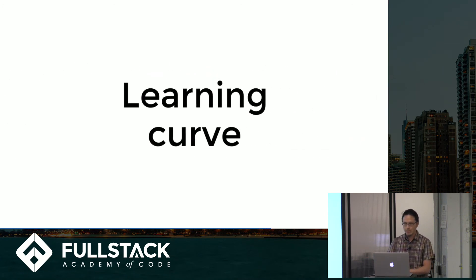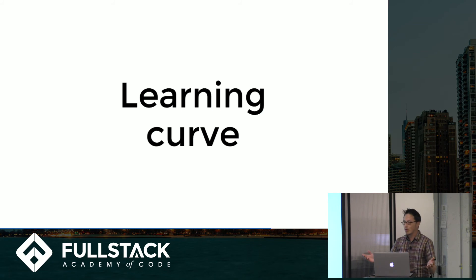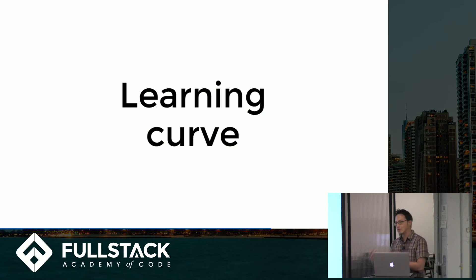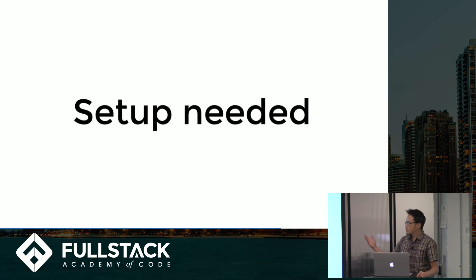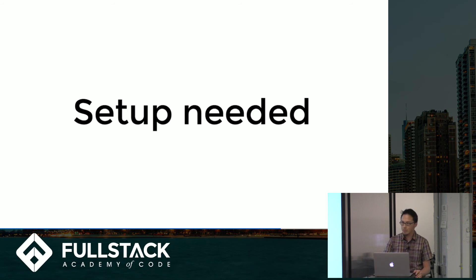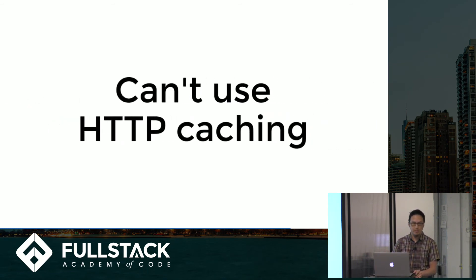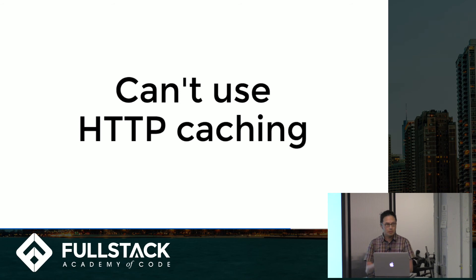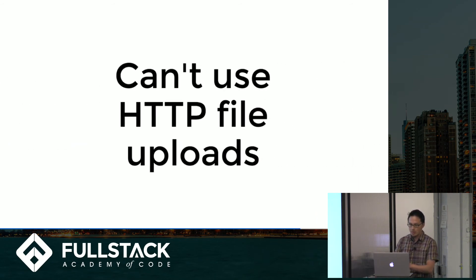What are the cons of GraphQL? The first one is that there is a learning curve. REST is pretty intuitive — when you're doing CRUD operations, all the verbs make simple sense. Whereas with GraphQL, the queries are intuitive, but the resolvers and the schemas are not quite so much. There's also setup needed: you need a GraphQL client as well as a GraphQL server, so it's not just as simple as writing up some routes. A third con is that you can't use HTTP caching, which is helpful to avoid refetching resources. REST does this very well because it uses HTTP, but GraphQL only uses fields.